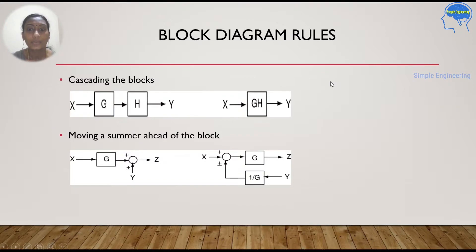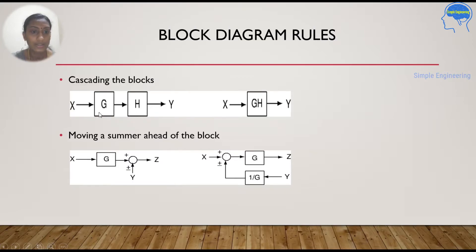Block diagram rules: in order to reduce the block diagram and find the transfer function, we have certain rules. The first one is cascading the blocks. Here G is one block, H is one block, and you are giving X as input and Y as output. By cascading these blocks together, you will get G into H.